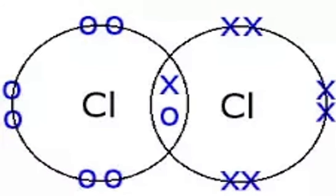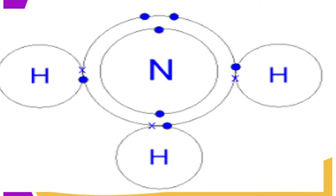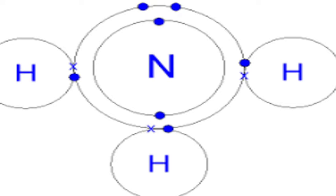Another substance that has covalent bonds is ammonia. An ammonia molecule has covalent bonds between the three hydrogen atoms and the nitrogen atom.